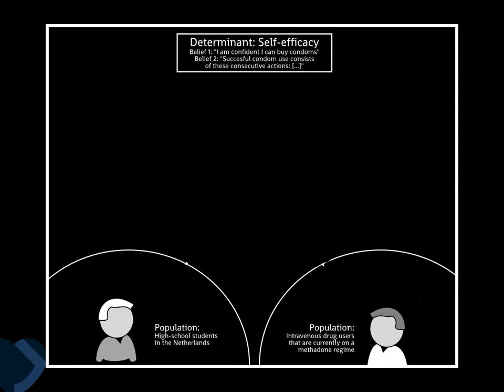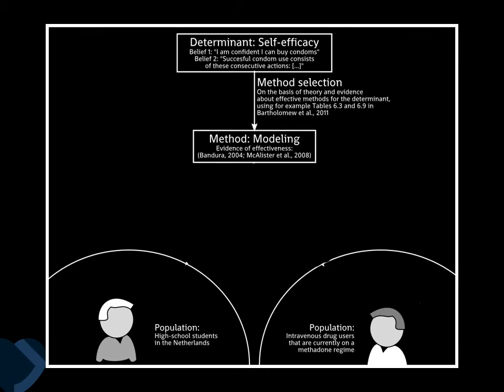The paper by Gerjo, the accessibly-intended one, has two very useful figures I've included here. Imagine you have the determinant self-efficacy and two beliefs you want to target: that people are confident they can buy condoms, and that they know how to actually use condoms. You select methods by looking at the literature — for example, the intervention mapping book's tables with methods for changing self-efficacy — and then decide that you want to use modeling.